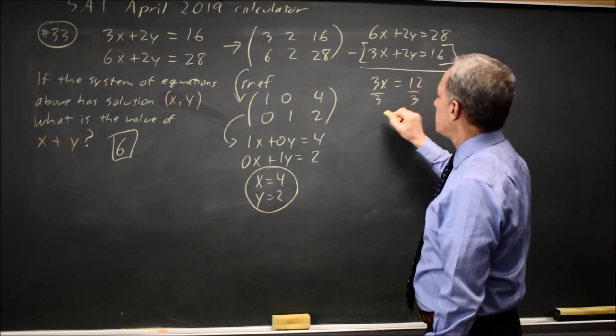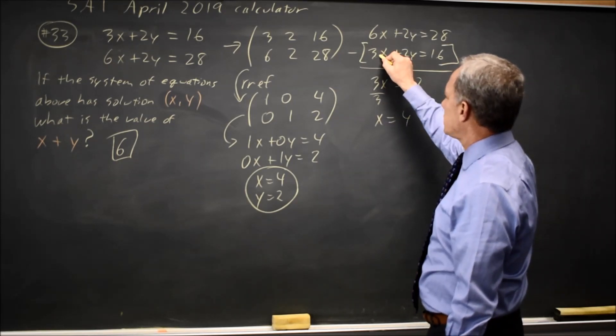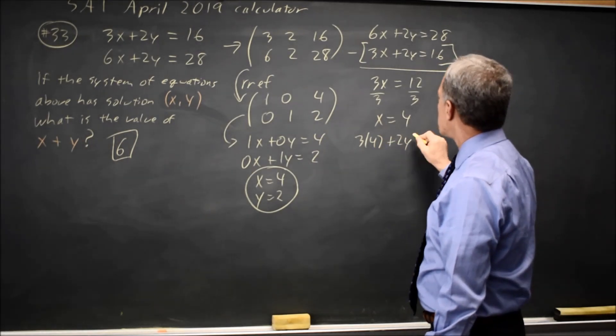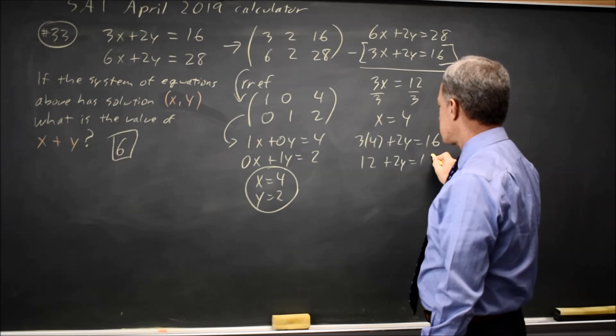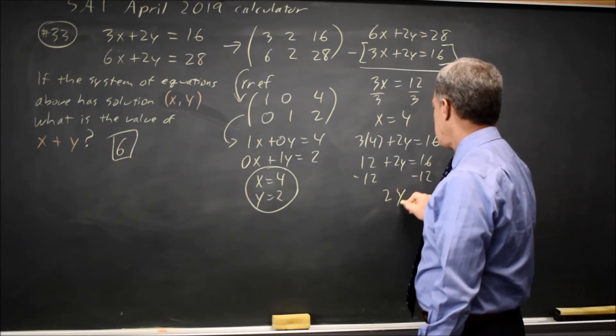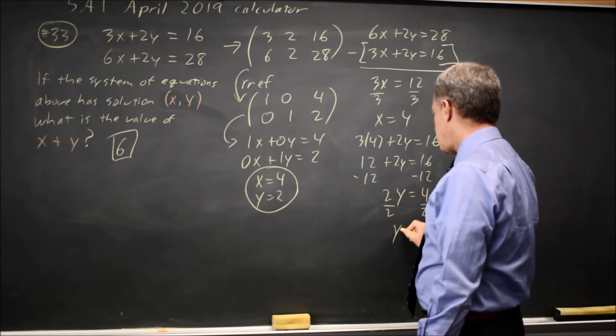Divide both sides by 3, you get x equals 4. Substitute that into either equation. So 3 times x is 3 times 4 plus 2y equals 16. So 12 plus 2y equals 16. Subtract 12 from both sides. 2y equals 16 minus 12 is 4. Divide both sides by 2 and y equals 2.